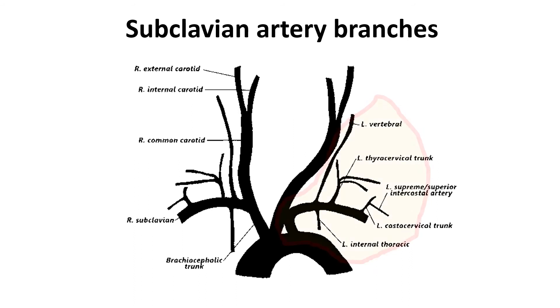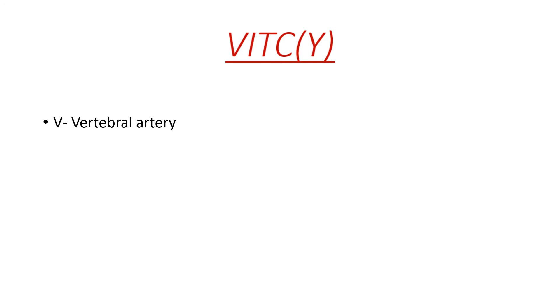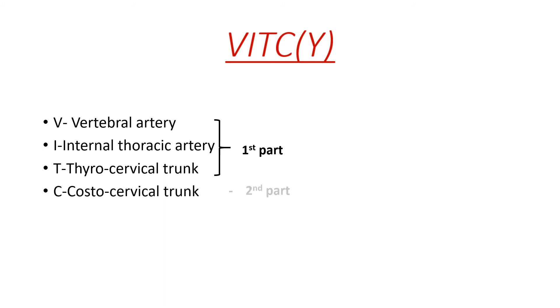Subclavian artery is a branch of the aorta. The covered area includes the branches of the subclavian artery. Use 'C' to remember the main branches of the subclavian artery — as it says, like C, there is no Y there. The vertebral, internal thoracic, and thyrocervical branches are given by the first part of the subclavian artery.